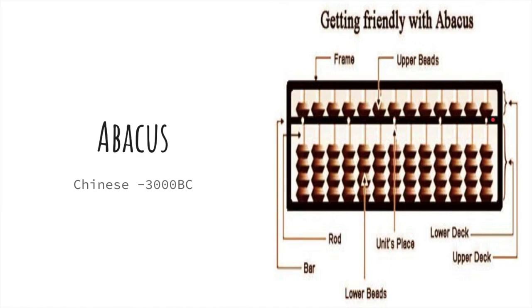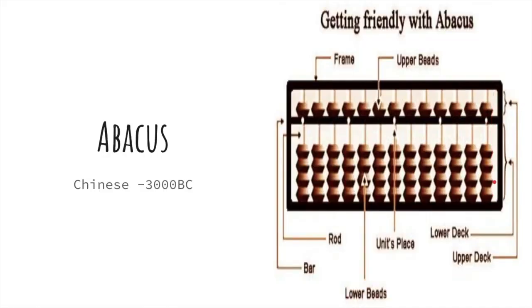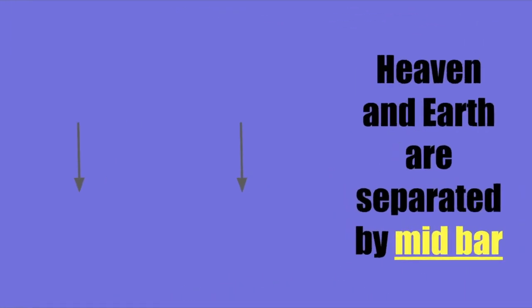We will discuss it later on. Abacus was used by the Chinese people to perform calculations. It was made up of wooden frame like we saw there, in which rods were fitted across the round beads sliding on the rod. This means these rods are fitted across where round beads are placed.